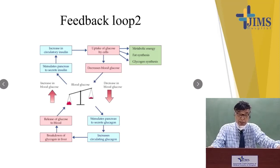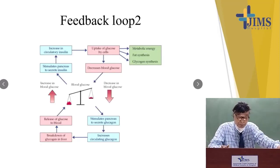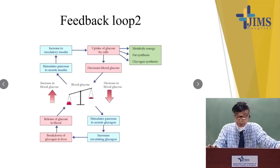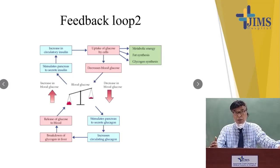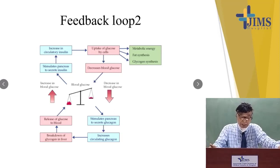Feedback loop two involves blood glucose regulation. If the patient has increased blood glucose, the pancreas is stimulated to secrete glucagon. This increases circulatory glucagon, which causes breakdown of glycogen in the liver, releasing glucose into the blood and thereby increasing blood glucose. On the other hand, if blood sugar is high, the pancreas is stimulated to secrete more insulin.